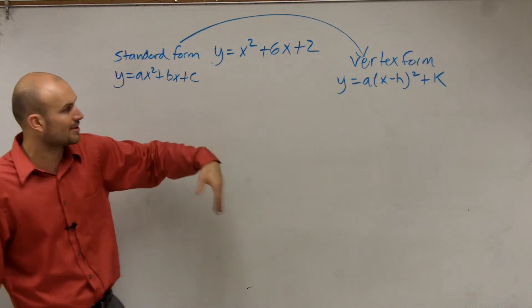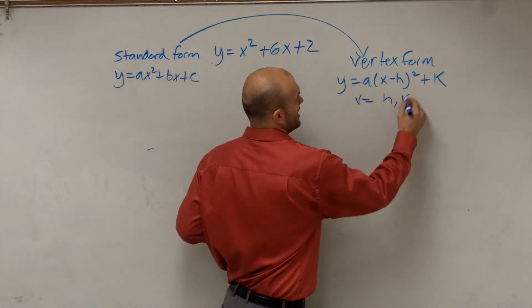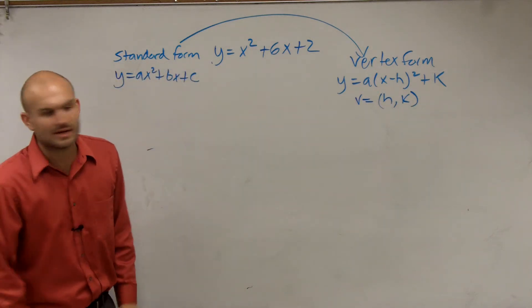then you plug that back into the formula. Where here, your vertex is just h comma k. So how are we going to do this?